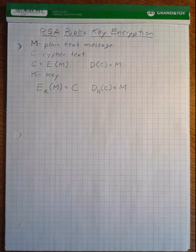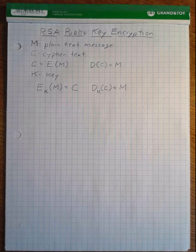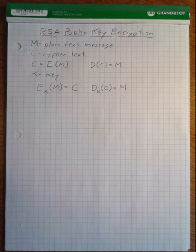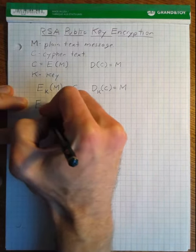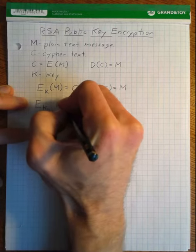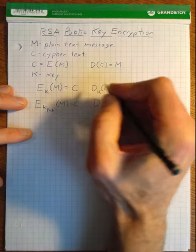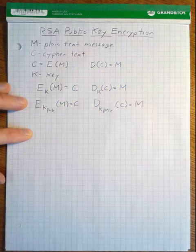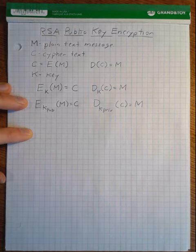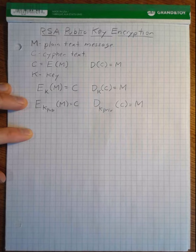Public key encryption solves this problem by introducing two different keys: what we refer to as a public key and a private key. For our communication scenario, the public key is going to be used for encryption, and the private key is going to be used for decryption. The public and private keys are different — they're not equal. Encryption uses the public key to create our ciphertext, and then decryption uses the private key to recover the plain text message. We can now set up a communication scenario where we use this public key to secure communications sent over the internet or an unsecure network.